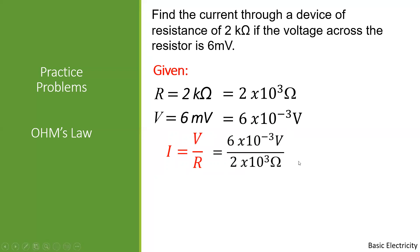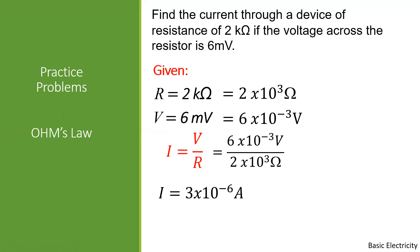So I = V / R = (6 × 10⁻³) / (2 × 10³) = 3 × 10⁻⁶ Amperes. Since times 10 to the negative 6 is equivalent to micro, we can rewrite the answer as I = 3 micro Amperes.